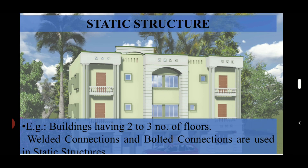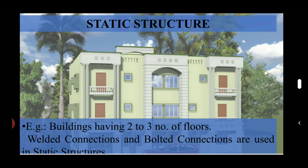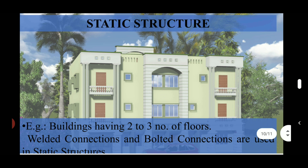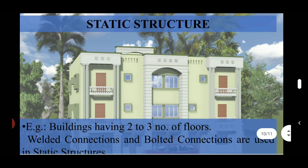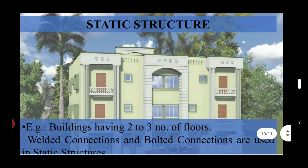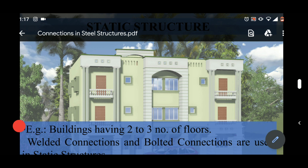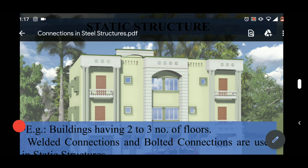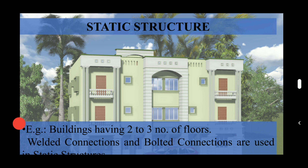An example of a static structure is buildings up to one or two stories in height — that is, buildings of G+1 or G+2, having two to three floors. These are the static structures. In static structures, welded connections and bolted connections are used. Welded connection is also a rigid type of connection. These two types of connections are used in static structures, where the load is not dependent on time.